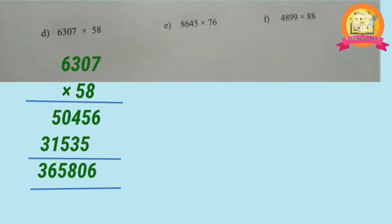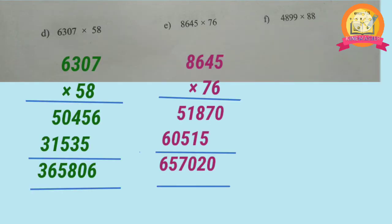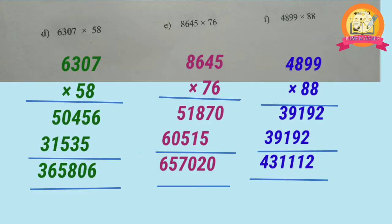D: 6,307 multiplied with 58, we get 3,65,806. E: 8,645 multiplied with 76, we get 6,57,020. F: 4,899 multiplied with 88, we get 4,31,112.